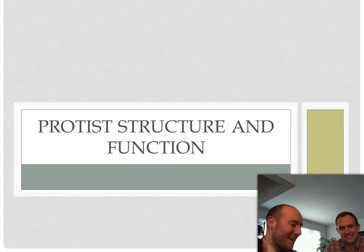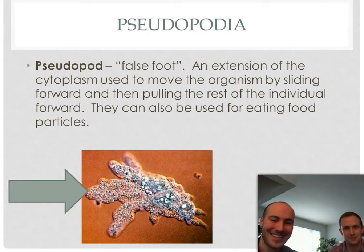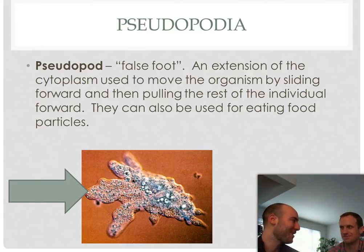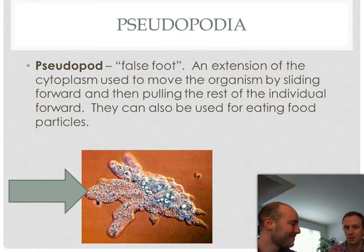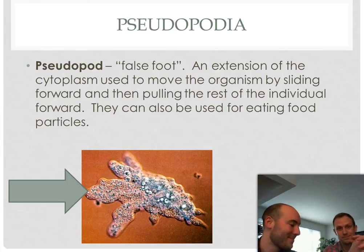We're going to talk about how protists use different structures to fulfill their needs for life. This is a picture of an amoeba. Amoebas use something called a pseudopod to move — pseudopod means false foot. The amoeba is kind of like a blob, and it can project part of its cell forward to act like a foot, creating friction ahead and sloughing the rest of the body forward. While doing that, it's breaking down intracellular microtubules that help create the structure of the organism and then rebuilding them at the front to maintain shape and structure.